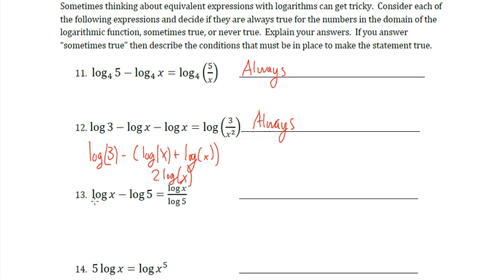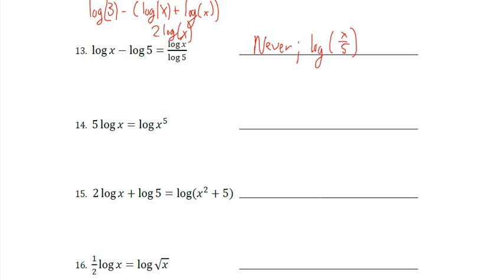Okay. Log x minus log 5 equals log x divided by log 5. In order for this actually to be true, this is what you'd end up with. Log of x over 5 is actually what you should end up with. Okay. 5 log x equals log x to the fifth power. Always true. That's one of our rules, again, just in reverse.